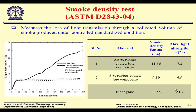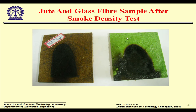The smoke density test tells us how much smoke is produced when the sample burns. Since smoke is toxic, we need to know this for building acoustic applications. The smoke density produced by fiberglass is quite high compared to our developed jute-based composite. Video shows the fiberglass sample burning badly, while the jute composite burns much less.